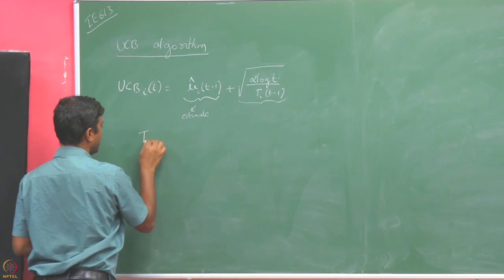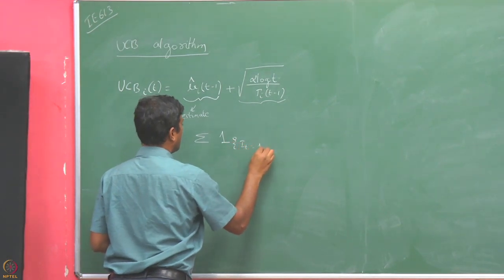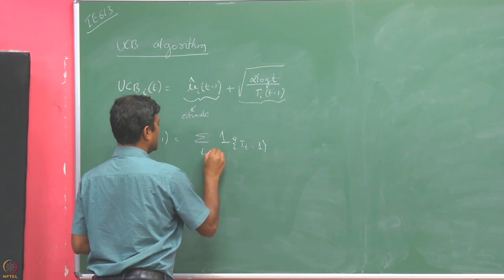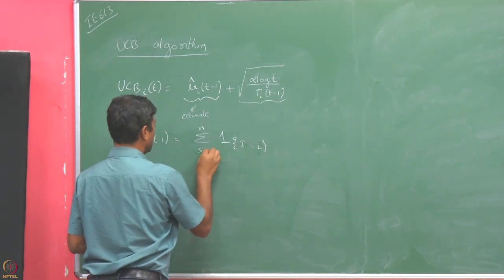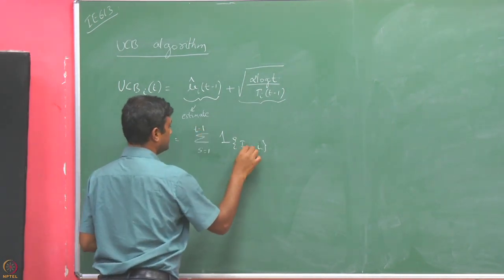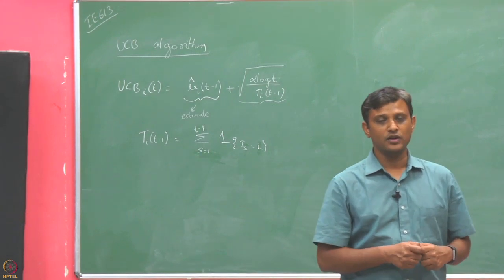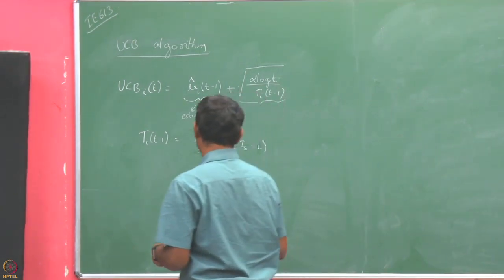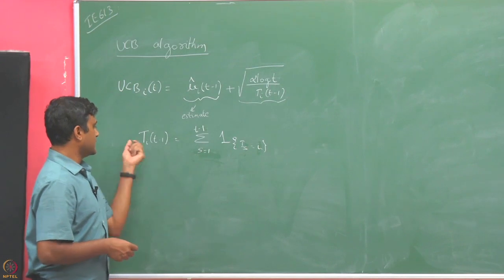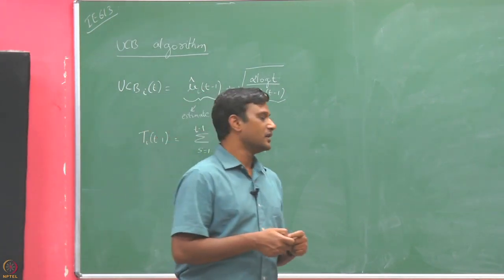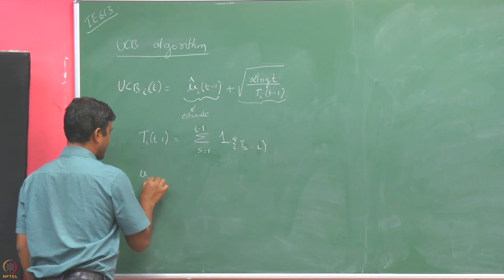How do we define t_i(t-1)? This is the number of pulls of arm i up to round t-1. Recall that i_s denotes the arm pulled in round s. Depending on how many times arm i has been pulled over rounds 1 to t-1, this gives us t_i(t-1). This is just a recall of the notation.